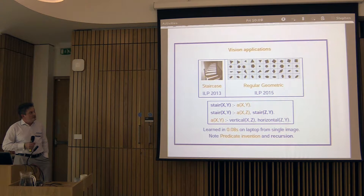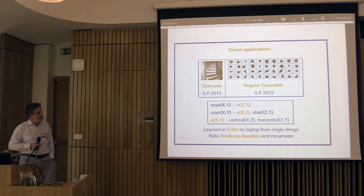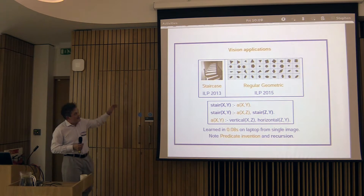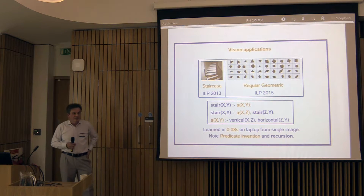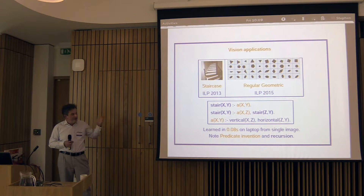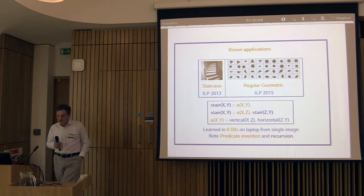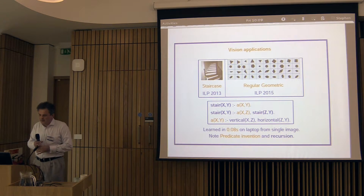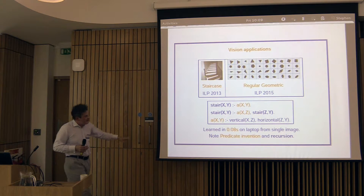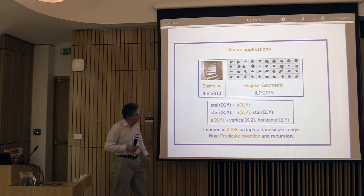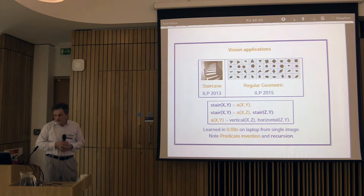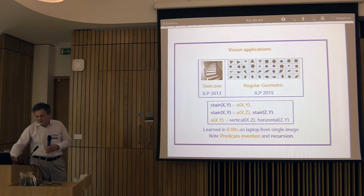Learning geometric concepts can be done efficiently and accurately using symbolic learning. Even though most people in AI think of vision as a lost cause for symbolic methods, I think vision is a highly symbolic area where symbolic machine learning could play a large part, with relatively small learning times.